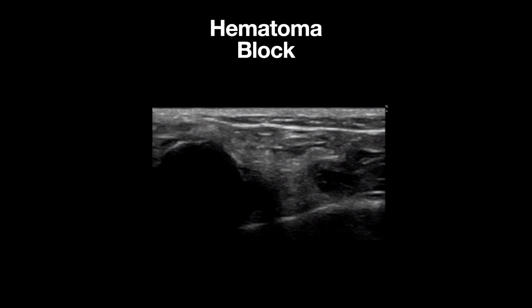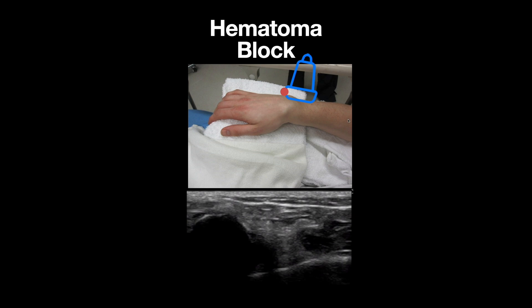This is an ultrasound image demonstrating a dorsally displaced distal radius fracture in a patient presenting to the emergency department after a fall onto outstretched hand. A linear probe is used and placed on the dorsal aspect of the patient's wrist with the probe marker pointed distally.